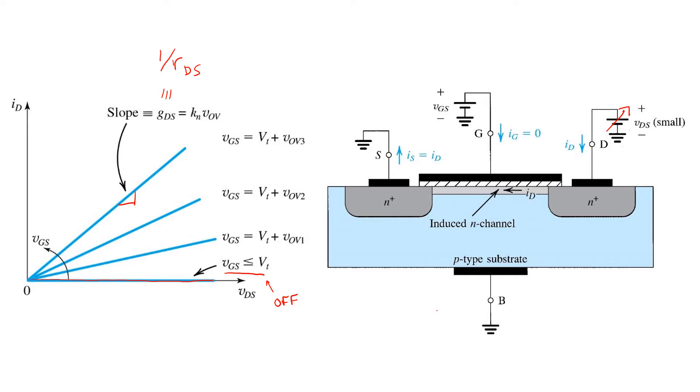As VGS is increased, the resistance decreases and the slope increases as more and more charge accumulates in the channel region.